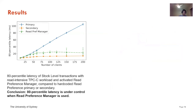The next figure shows the 80th percentile high latency of stock-level transactions in the same workload. Again, we compare three things: the blue solid line when read preference is hard-coded as primary, the orange line when hard-coded as secondary, and the green dashed line when the Read Preference Manager is activated. We can see that the 80th percentile high latency will be kept under control when the Read Preference Manager is used, and will not skyrocket as it does when read preference is hard-coded as primary.